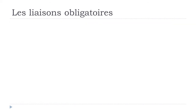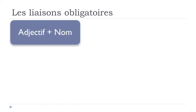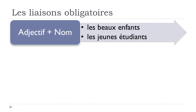Now, a situation where you have an adjective before the noun. For example: les beaux enfants. You make the liaison between 'beaux' (adjective) and 'enfant'. Interestingly, even though it ends with X, phonetically it sounds like Z — les beaux enfants. Same thing with les jeunes étudiants — the link between the two: les jeunes étudiants.